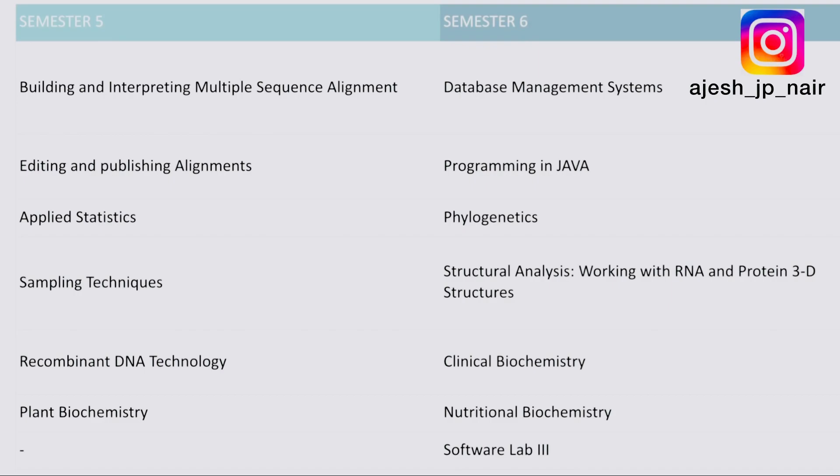Semester five includes building and interpreting multiple sequence alignment, editing and publishing alignments, applied statistics, sampling techniques, recombinant DNA technology, and plant biochemistry. Semester six covers database management system, programming in Java, phylogenetics, structural analysis, working with RNA and protein 3D structures, clinical biochemistry, nutritional biochemistry, and software lab.